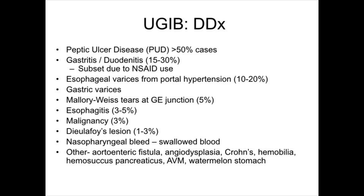Gastric varices are uncommon but are also included under portal hypertension. Mallory-Weiss tear at the gastroesophageal junction accounts for about 5%, oesophagitis 3-5%, malignancies, and Dieulafoy's lesions — a submucosal artery that intermittently bleeds. Nasopharyngeal causes of upper GI bleed are due to swallowed blood and can mislead clinicians unless actively sought for. Other uncommon causes include aortoenteric fistula, angiodysplasias, arteriovenous malformations, and portal hypertensive gastropathy.